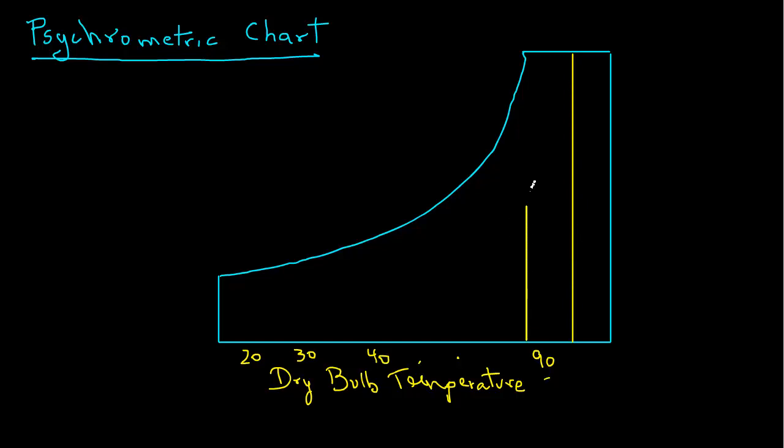These vertical lines represent constant dry bulb temperature. So any point on that line is a constant dry bulb temperature. For example, any point on the 90 degrees C line represents the constant temperature of 90 degrees C dry bulb temperature.